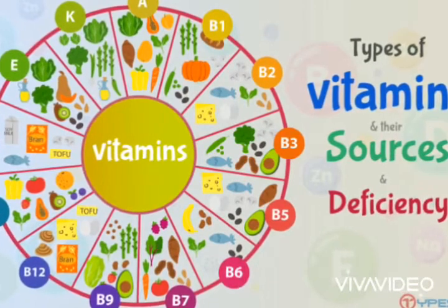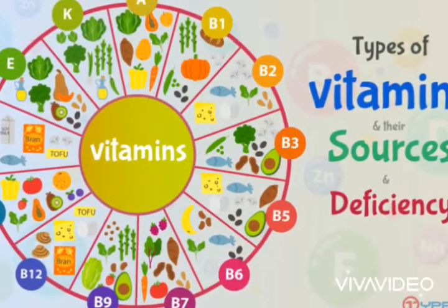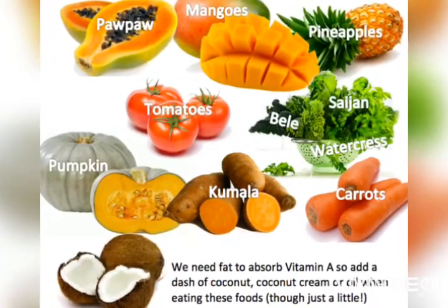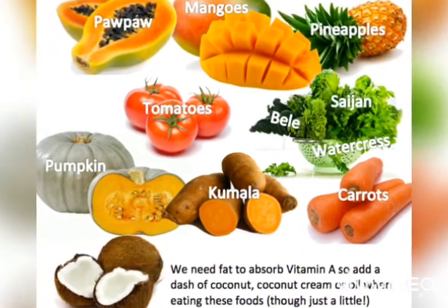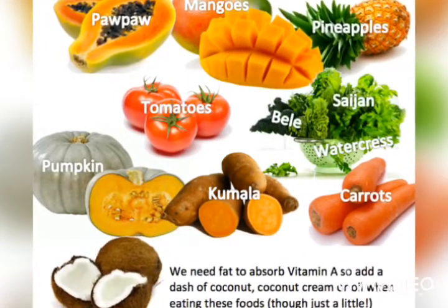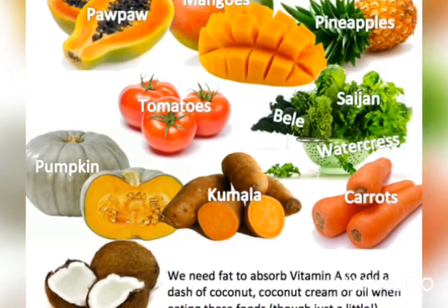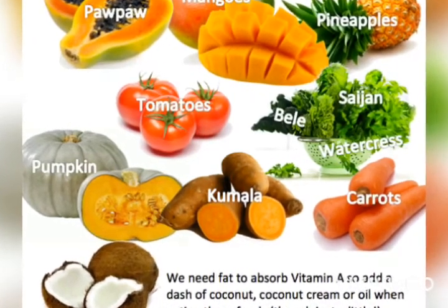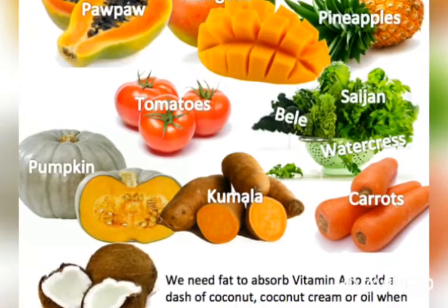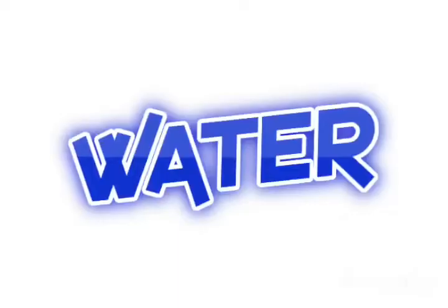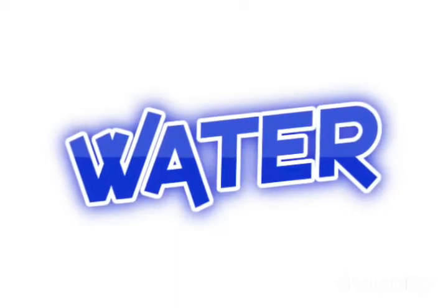B12, E, and K. Some examples of vitamin-rich foods include pepper, tomatoes, sweet potato, carbon, pumpkin, berries, and pineapple.